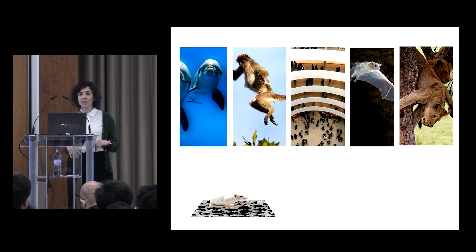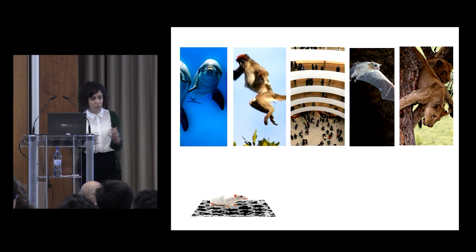Everything we know about grid cells comes from rodents running around 2D surfaces, but our world is three-dimensional, and mammals live and navigate through 3D space. And so we were asking, how do grid cells fire in 3D?